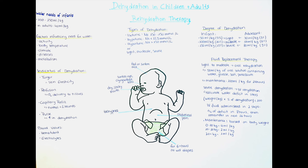If our patient is 75 kg, we can determine the maintenance fluid amount: the first 10 kg gets 4 mL each, so that's 40 mL; the next 10 kg gets 2 mL per kilo, so that's 20 mL extra; then the last 55 kg gets 1 mL per kilo, so 55 mL. So 40 plus 20 plus 55 equals 115 milliliter per hour in maintenance. That was it for this video — thank you so much for watching. If it was helpful for you, we would really appreciate if you could subscribe.